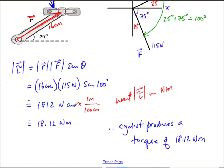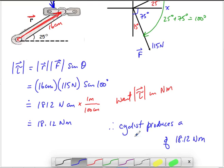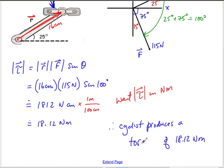Now, 1812 newton centimeters, technically, that's still a torque. Those are still correct units for torque. They're just not the standard units for torque. And if you're doing a question in the book, in all likelihood, it's going to use or it's going to expect units of newton meters.